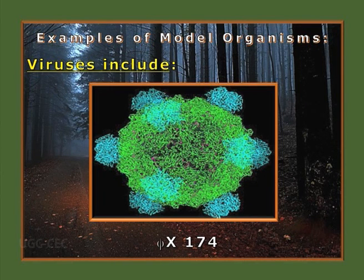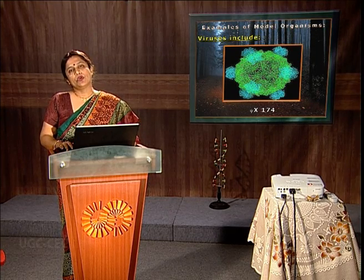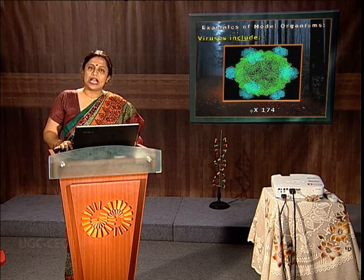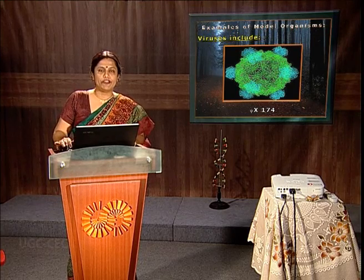Next important is ΦX174. It is supposed to be the first genome sequenced in the history of sequencing. ΦX174 is very important as it is a single-stranded, covalently closed circular phage, with various applications in understanding the mechanism of a phage becoming established inside the bacteria.